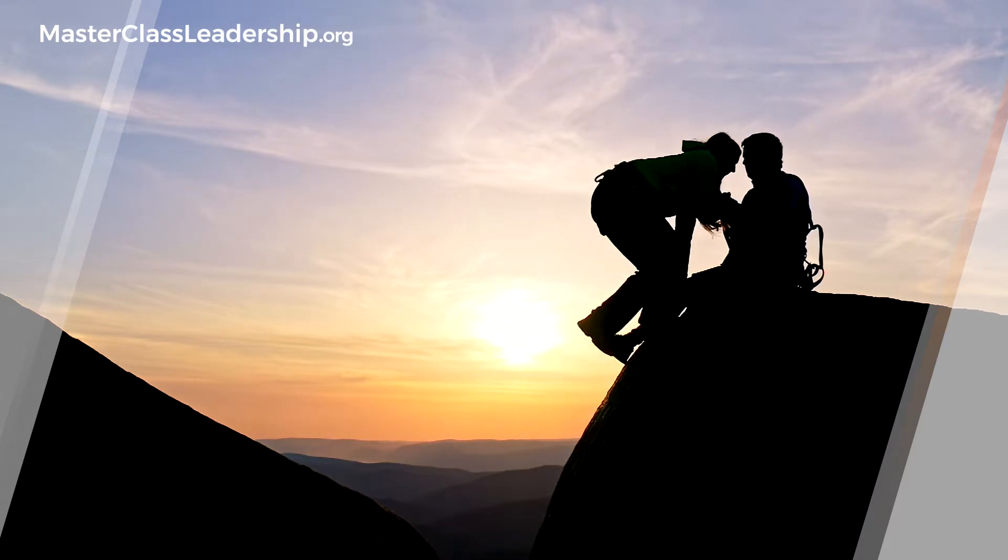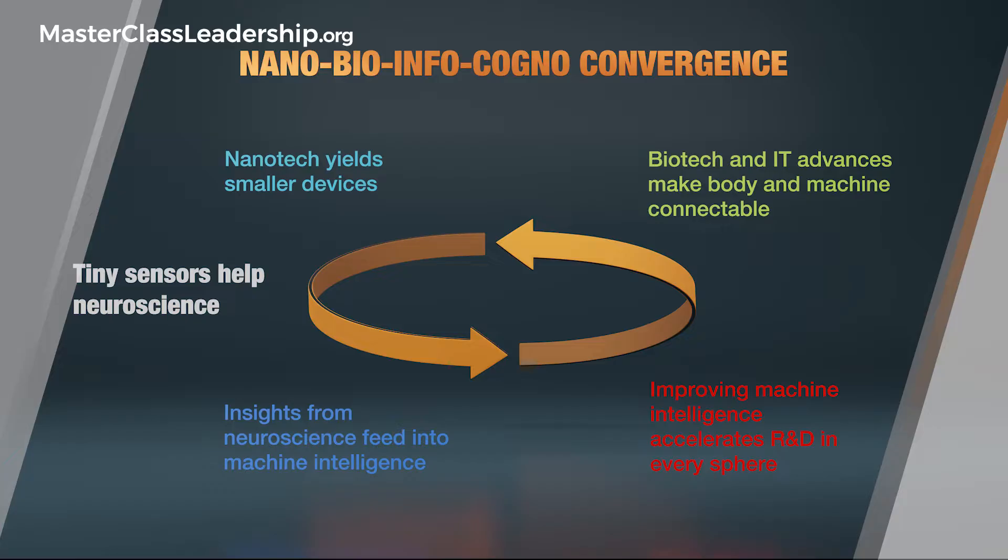As we get more and more nanotechnology it gives us smaller devices. Those tiny little sensors give us information that you can then feed into neuroscience, that neuroscience feeds into artificial intelligence and accelerates that, that improving machine intelligence accelerates us in every scientific development sphere because we get more assistance, and then that helps us to make even more biotech and more IT so we get more advances and that goes round and round in circles. So you get this nano-bio-info and cogno convergence which is accelerating us towards a very far future which is very advanced combination of man and machine.